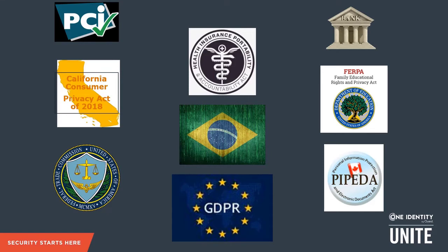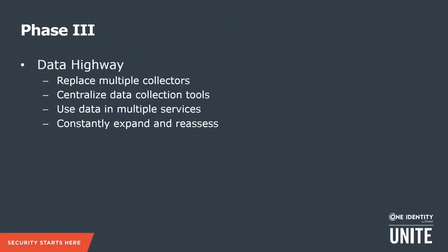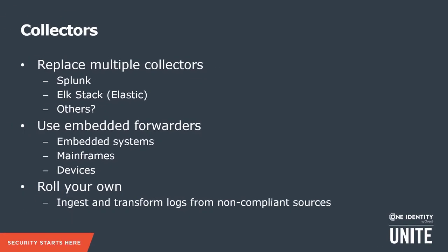This is where making a compliant safe SIEM is important. But there's always phase three, which is a little bit more forward-thinking. The idea is you replace all your collectors — all those logging tools that you have for different applications — and you use one. You centralize all that data into one pass-through, one data highway.